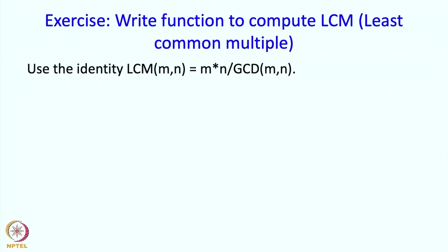We are going to write this code using the identity that the LCM of two numbers M and N is their product divided by their greatest common divisor. Now we already know how to calculate the greatest common divisor, so we can use this to calculate LCM as well.